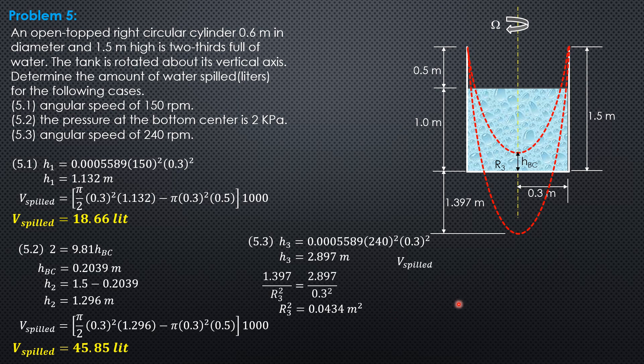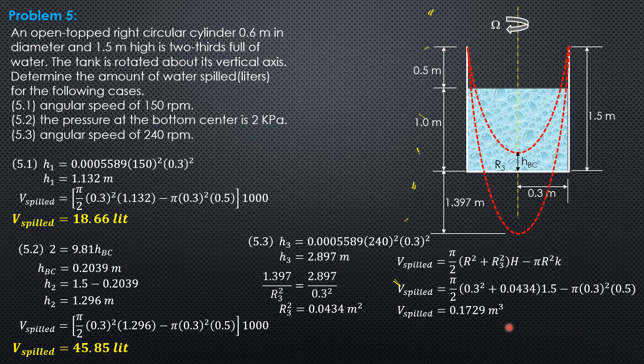Volume spilled equals pi over 2, quantity r squared plus r3 squared, times big H, minus the original volume of air, which is pi r squared times K, where r is 0.3 and K is 0.5. Substituting: volume spilled is pi over 2, quantity 0.3 squared plus 0.0434, times 1.5, minus pi times 0.3 squared times 0.5. Volume spilled for this case equals 0.1729 cubic meters, then times 1,000 in liters: 172.9 liters.